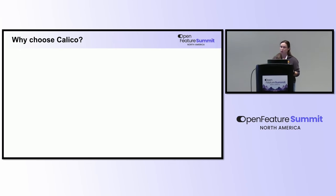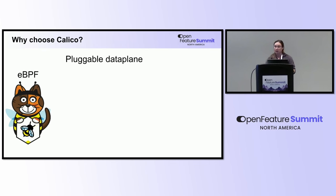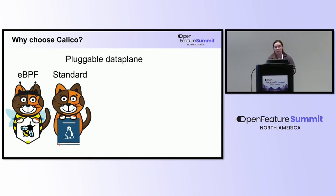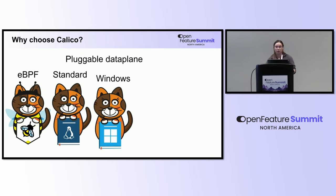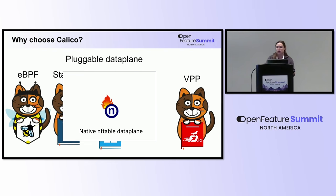You might be wondering why people choose Calico. Calico is the only CNI with a pluggable data plane, meaning you're not bounded to a certain kernel or environment. You can use supported configuration and feature flags to change the networking engine in seconds without redeploying. Calico has an eBPF data plane communicating directly with the Linux kernel, supports the standard Linux networking stack using IP tables or IPVS, a Windows data plane based on Microsoft HNS, a VPP data plane based on DPDK for edge computing, and a native NFTables data plane for Red Hat Enterprise Linux 9 and above.